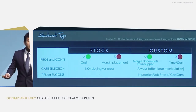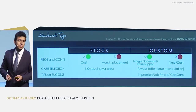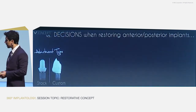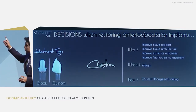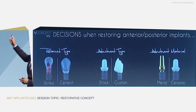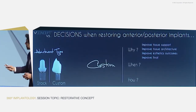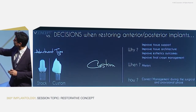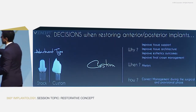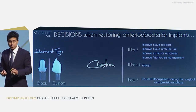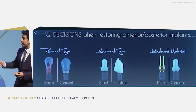We use custom abutments always when we have to manipulate the tissue. We have to take care with the impression, the lab phase, and try to design the abutment with CAD-CAM. Why? Because we can improve tissue support and architecture, earn better aesthetics and aesthetic outcomes, and improve final crown management for the technician. Our group prefers to use custom abutments for final restorations, especially when tissue has been managed during the provisional phase.